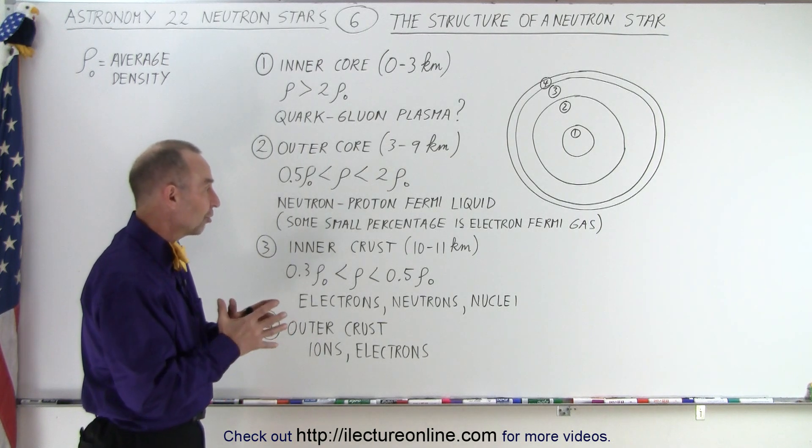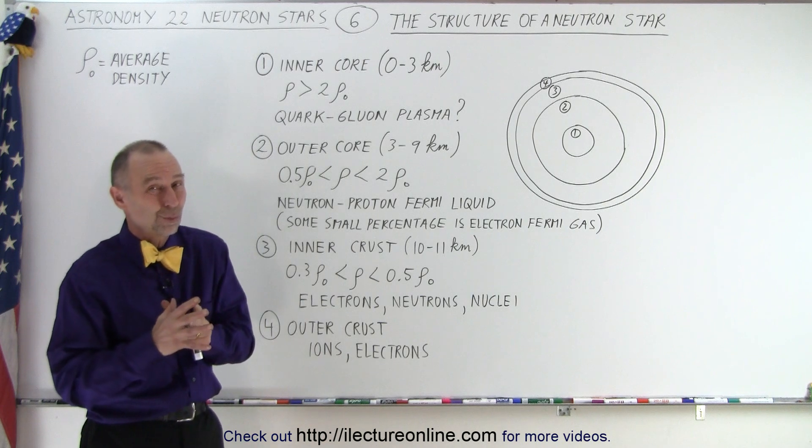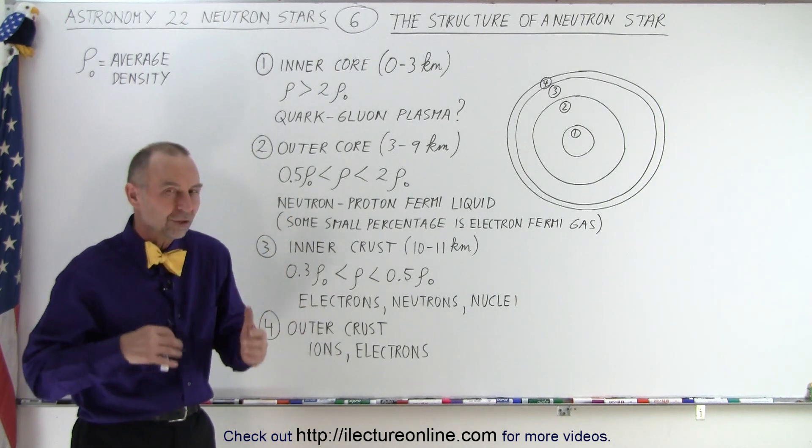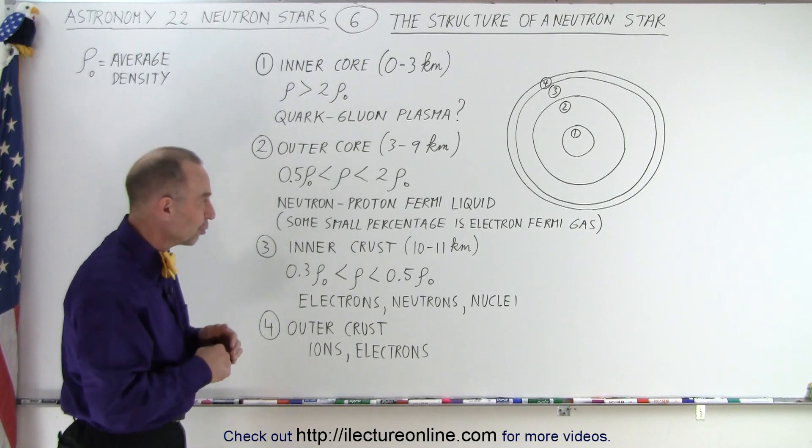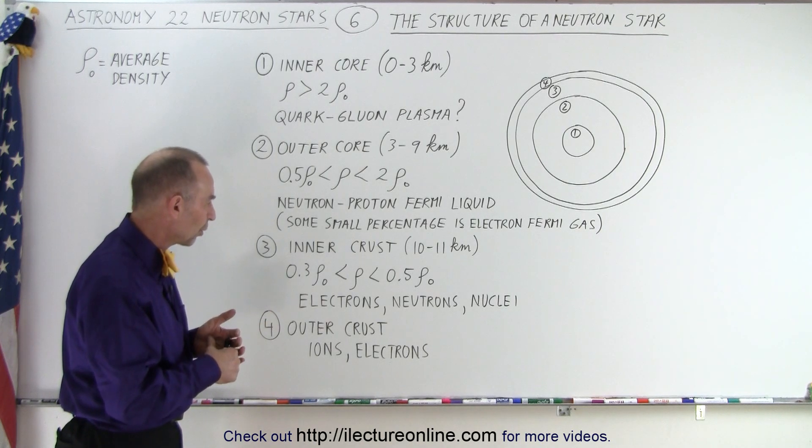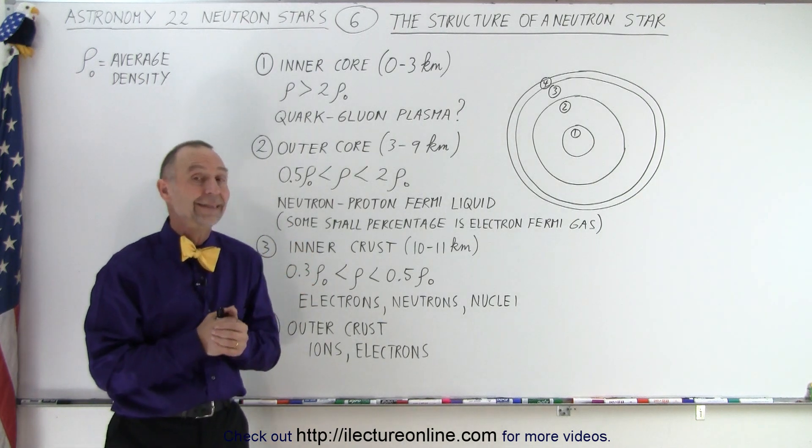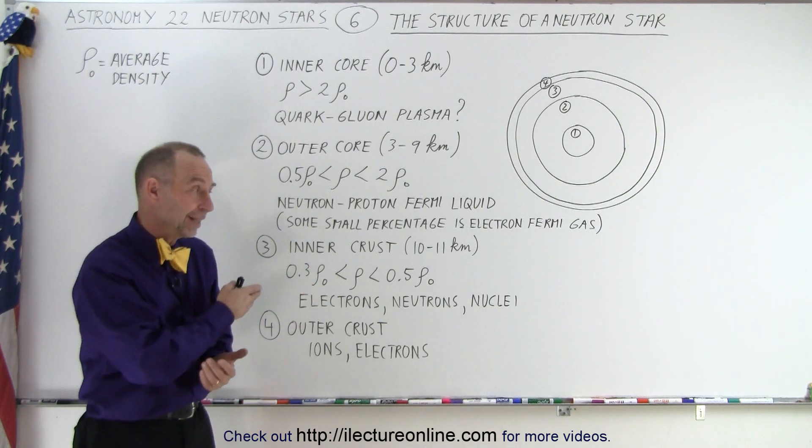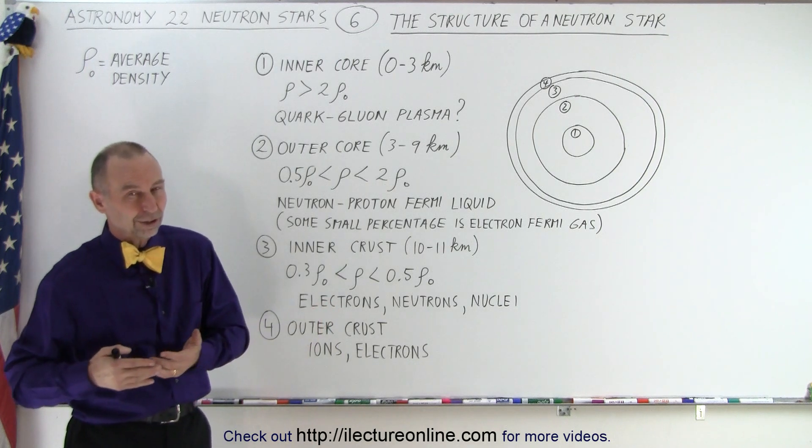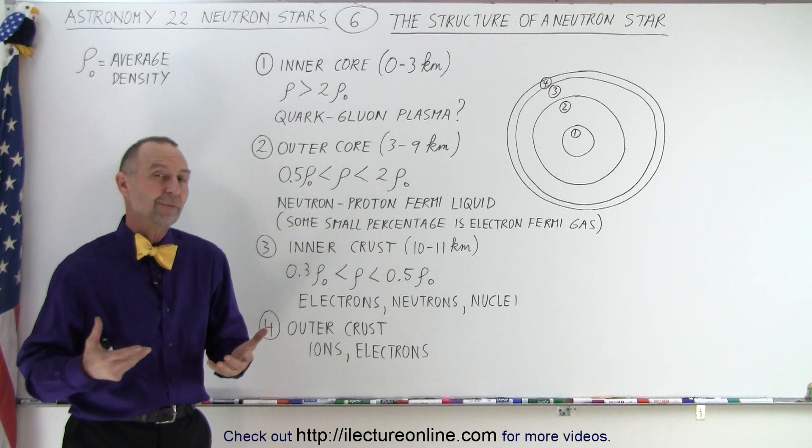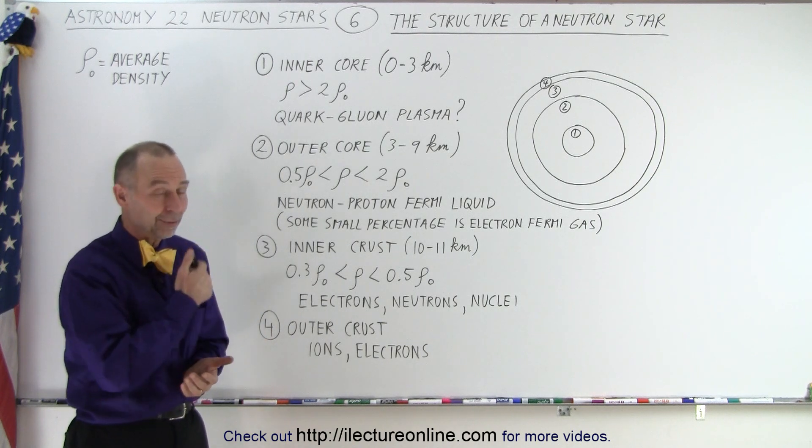So again, these are just theoretical models. We have no real certainty that this is exactly what it looks like. But as we understand more and more about the structure of neutrons and protons and the interaction between quarks and the gluons, we get a better and better idea what it might be like inside a neutron star. At least, it's a model, and we'll build upon it as time goes by and more information gets to be known. And that is how it's done.